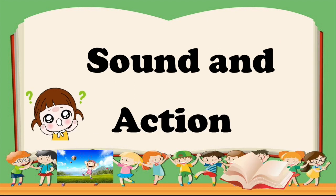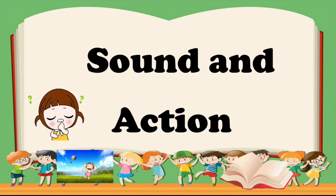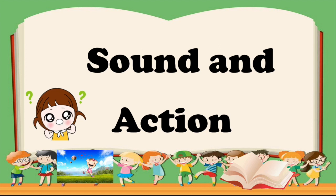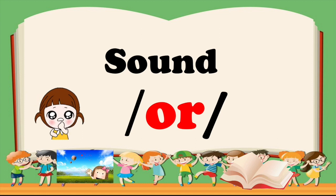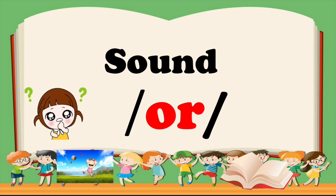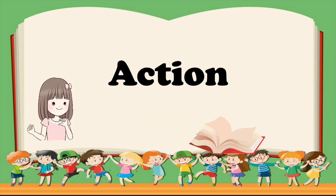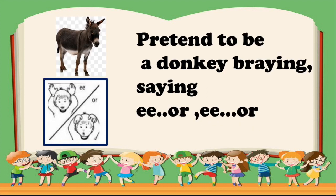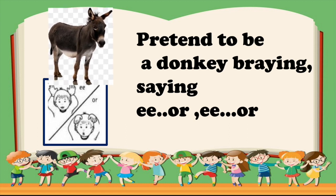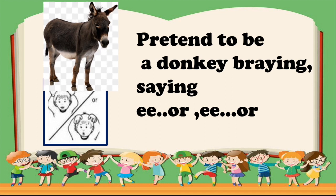Let's start with the sound in action. When we join the sound of letter O and letter R, it makes the OR sound. Please repeat after me: OR. That's right, OR. Now let's have the action. The action is just very simple. Let's pretend to be a donkey braying, saying E-OR, E-OR.